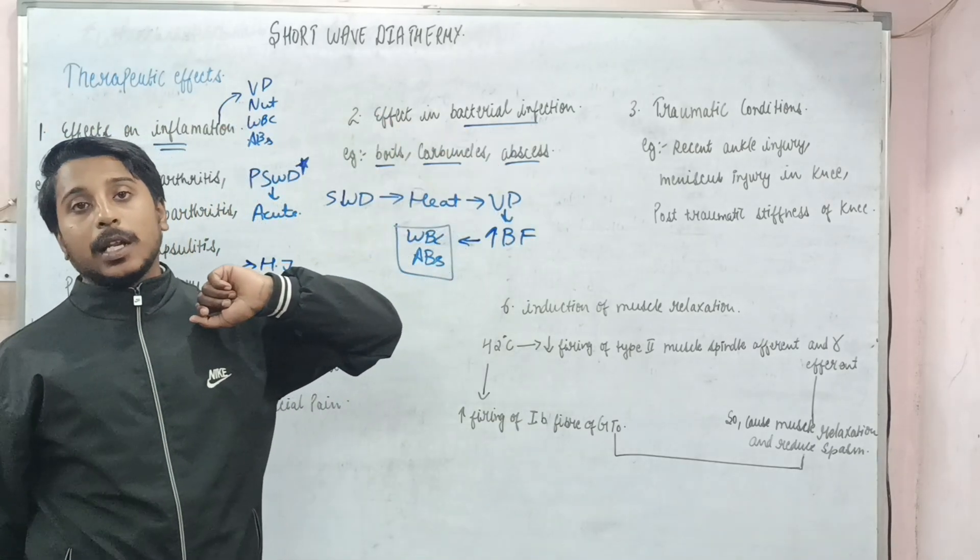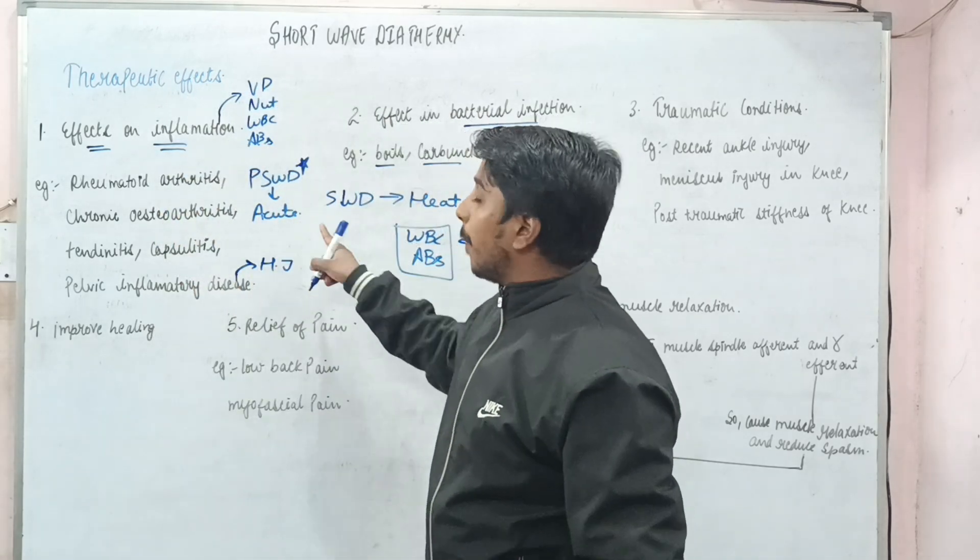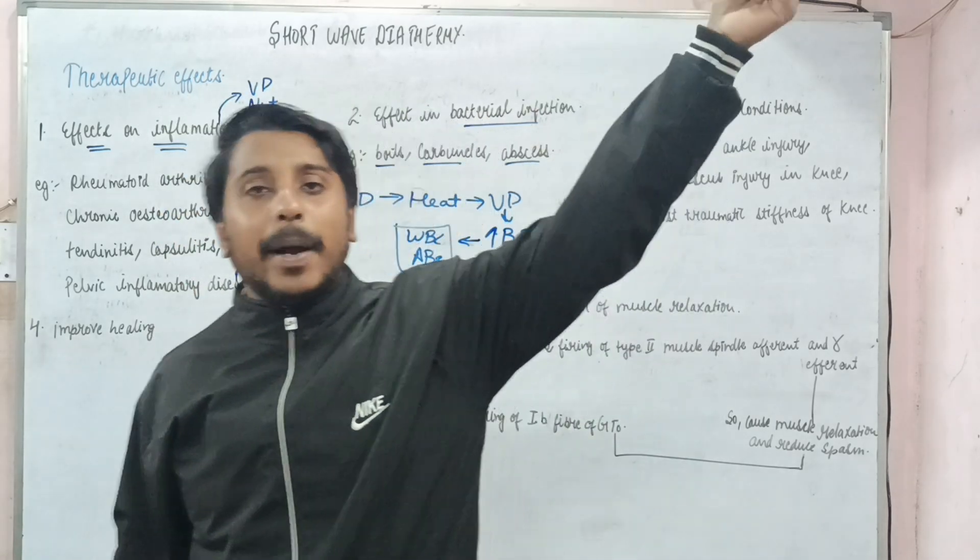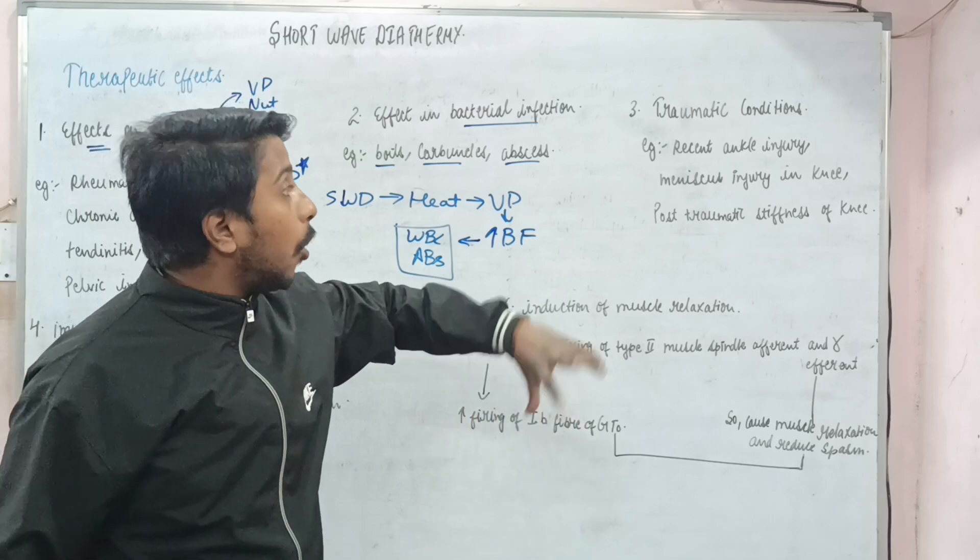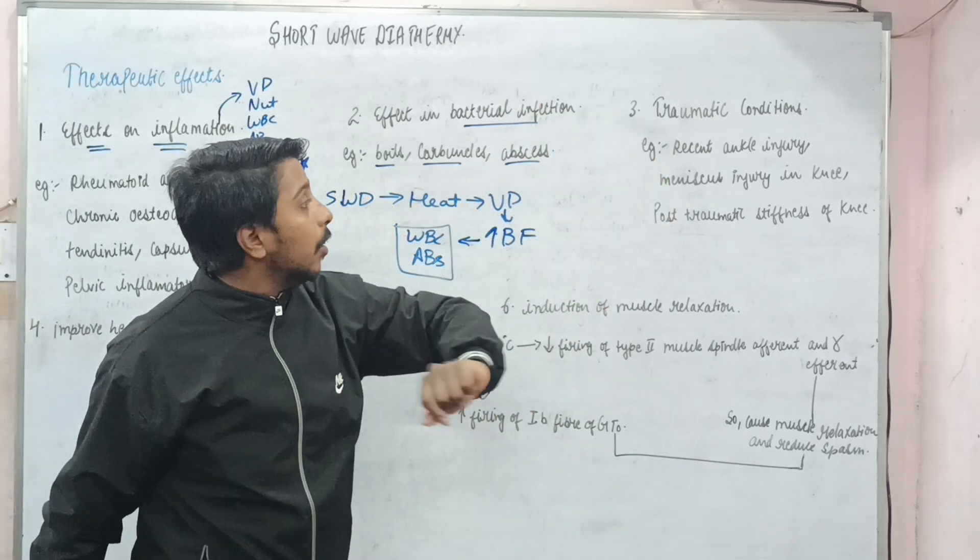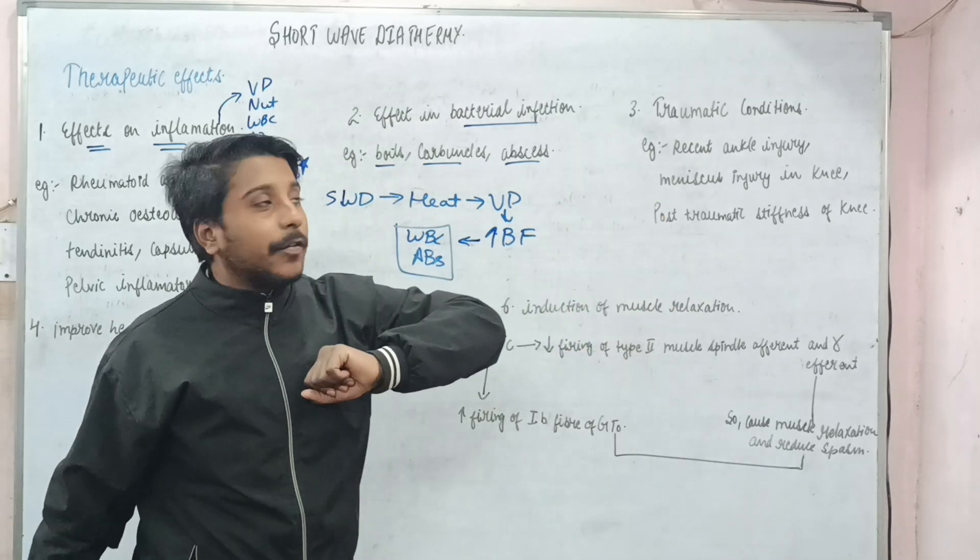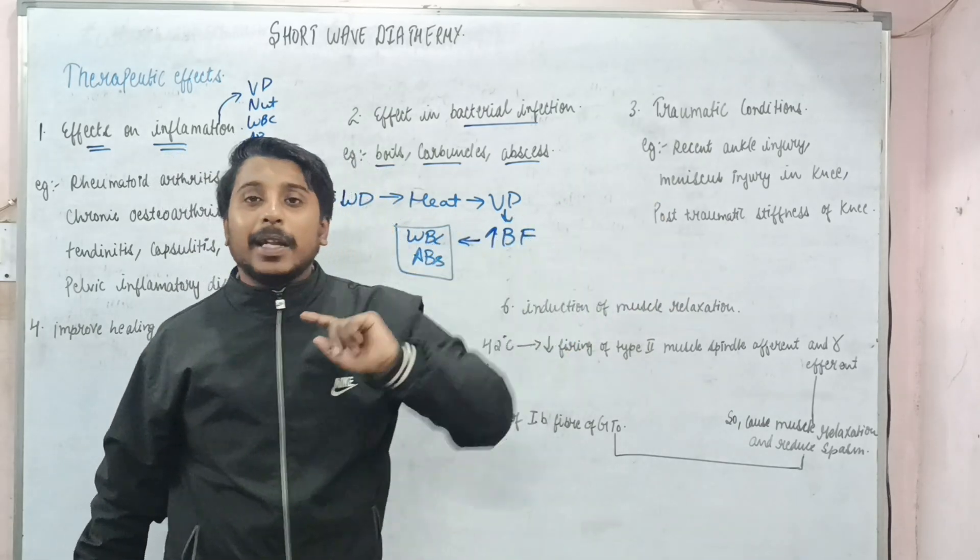Similarly, in traumatic condition, if the trauma is acute, we will use pulse SWD. But if the trauma is chronic - like recent ankle injury, meniscal injury in knee, or post-traumatic stiffness - the approach differs. In post-traumatic stiffness, what do we want to reduce? Definitely the stiffness.